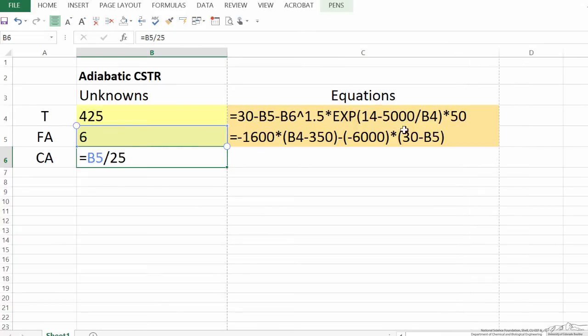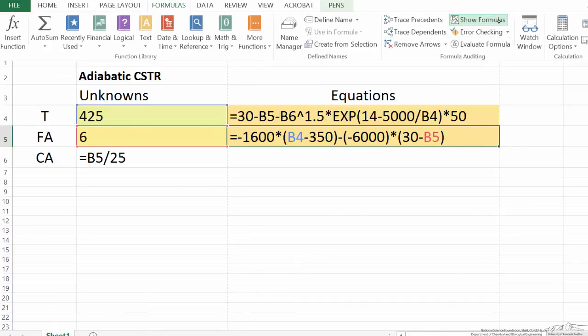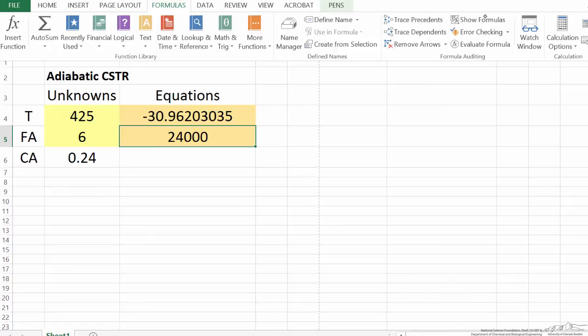The first equation is the mass balance, and then the second equation is the energy balance. And so what I'm going to do is use solver. So let me switch back so we can see the numerical values when we do the calculations. We want these two orange cells to be zero to solve the equations because we arranged them with all the terms on one side.